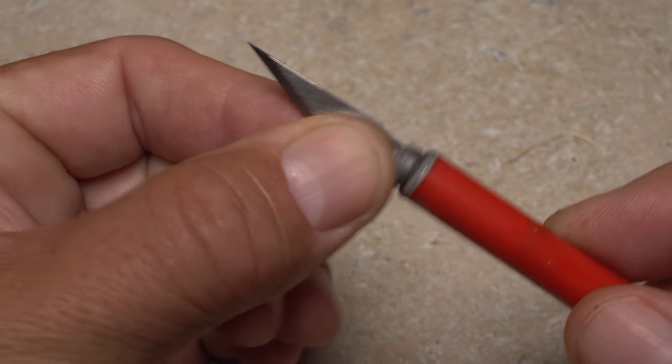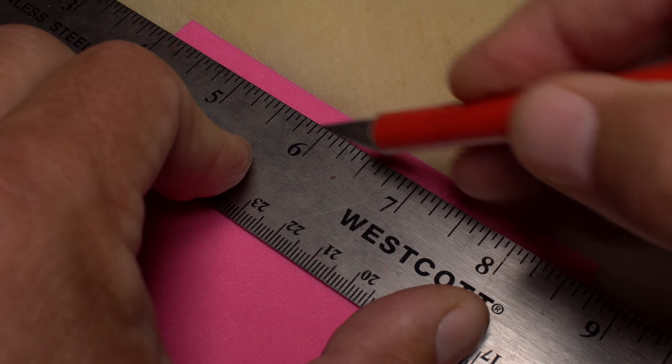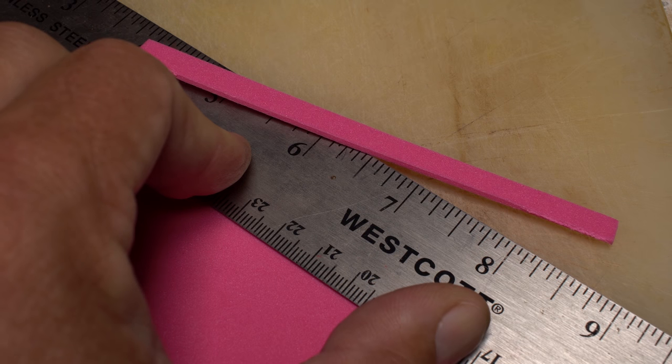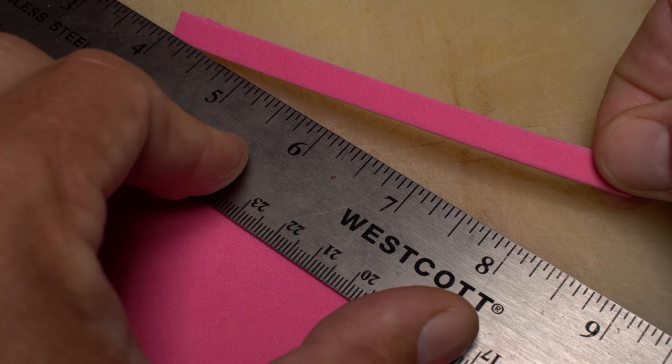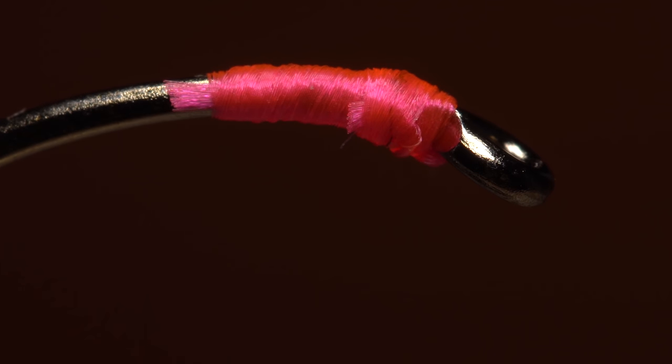With a fresh blade inserted and secured in the knife, it can be used for more critical assignments like cutting craft foam cleanly and accurately, better than you can do with scissors. Or after completing a whip finish, cutting your tying thread free. A hobby knife with a fresh blade is always a part of my fly tying kit.